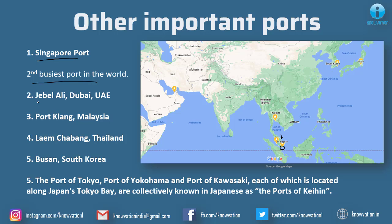Next is Jebel Ali, which is in Dubai, UAE. Its location is here in UAE, near to Saudi Arabia and Oman. Next is Port Klang in Malaysia — just above Singapore port, you will find Port Klang. Next is Laem Chabang in Thailand; Thailand is here near to Vietnam, and here we find Laem Chabang, which is an important port.